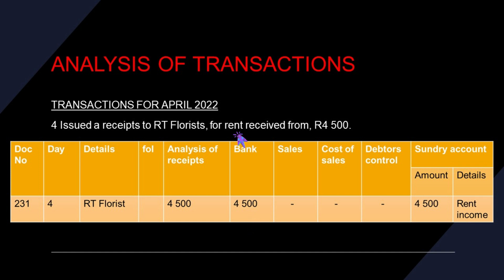This R4,500 — what was it for? It was for rent. Do we have a column for rent? We don't have a column for rent. Then we go straight to the sundry account, which was created for transactions that don't have a particular column. Under sundry account, the amount is R4,500 and the details are 'rent income.'